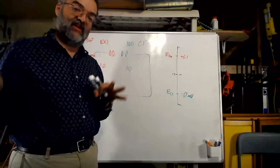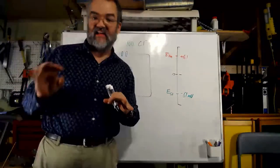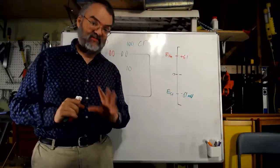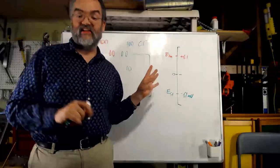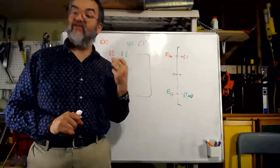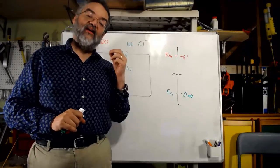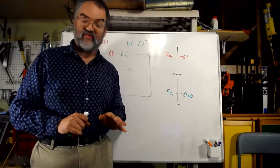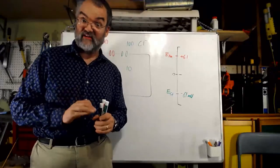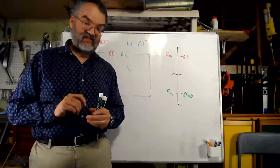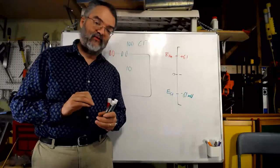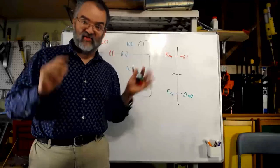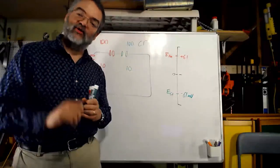That sets us up for understanding how membrane potential works in the nervous system. Membrane potential is hard — spend some time on it and practice the problems. You will get them wrong for a while; don't be discouraged, that's normal. There will be test questions on this, so it's worth your time. If you run out of practice problems, let me know and I'll send you more. You can do it — I'll see you in the nervous system lectures.